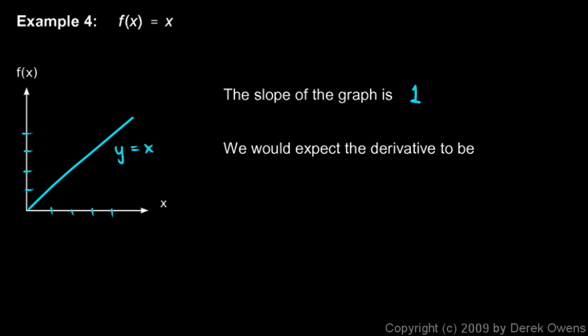Basically our line that we commonly think of is y equals x. So the slope of this graph is 1 everywhere, no matter what point you are on the graph. So we would expect the derivative to be f prime of x equals 1. Our derivative function would just be a simple constant.